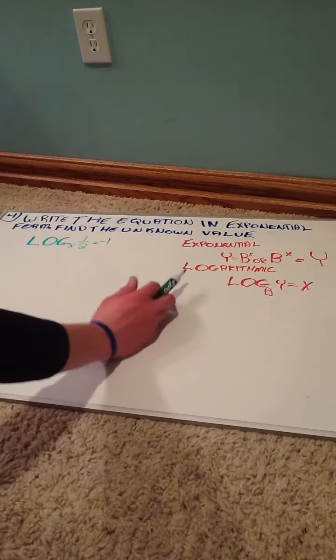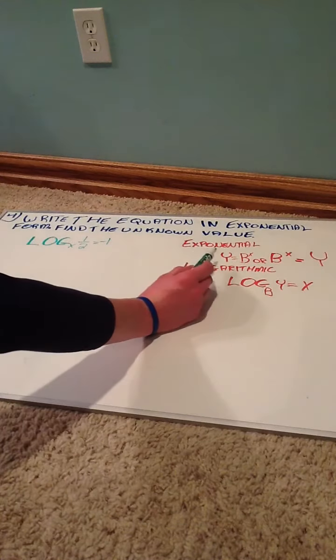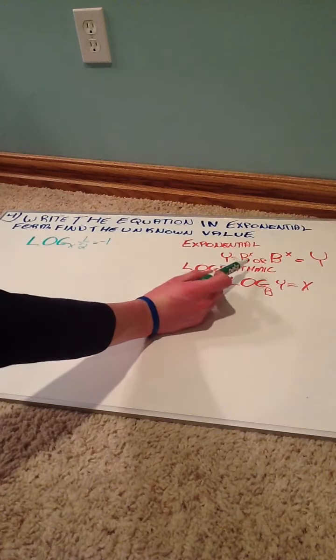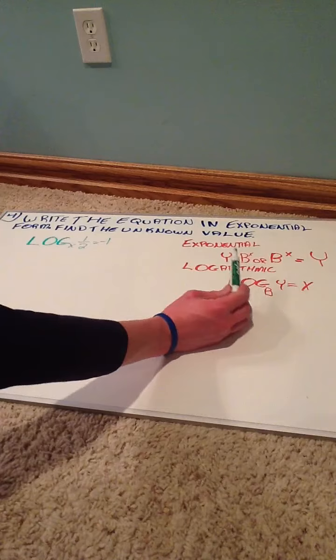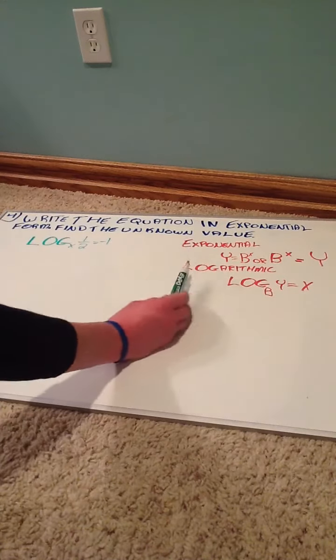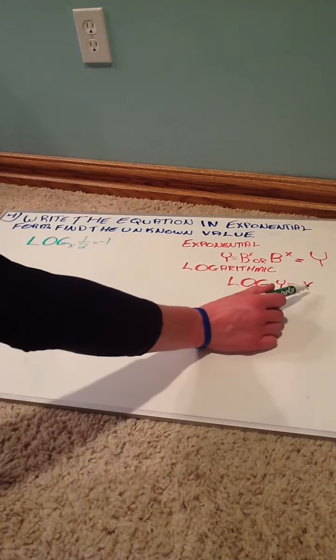So over here, I just made a quick reference chart of our formulas. Exponential form is y equals b to the x, or b to the x equals y. It's the same thing, it's just backwards, sometimes it just helps to see it backwards. Now, logarithmic form is log base b of y equals x.